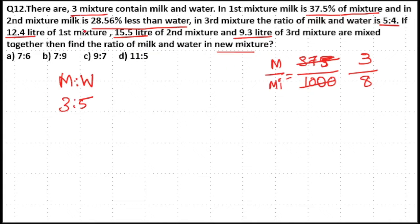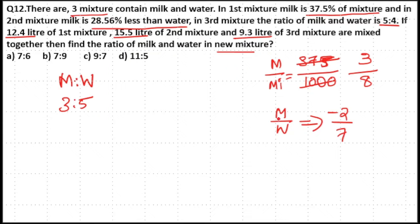For the second mixture, milk is 28.56% less than water. We know 57.14% is 4 by 7, so 28.56% will be 2 by 7. Since milk is less than water by 2 by 7, if water is 7, milk will be 7 minus 2, which is 5 parts. So the milk to water ratio is 5 to 7.